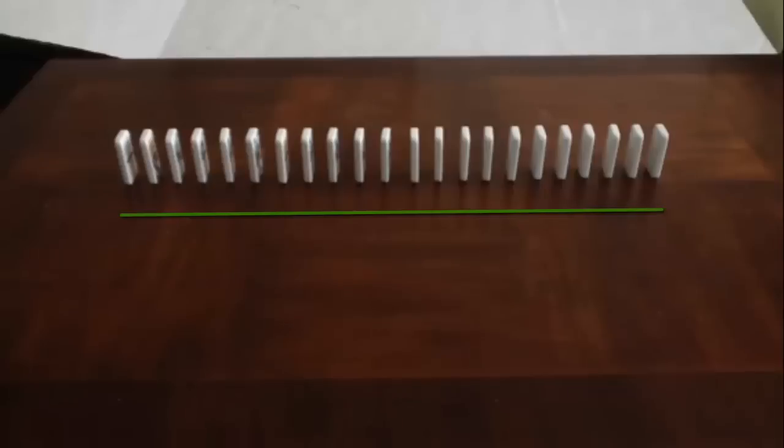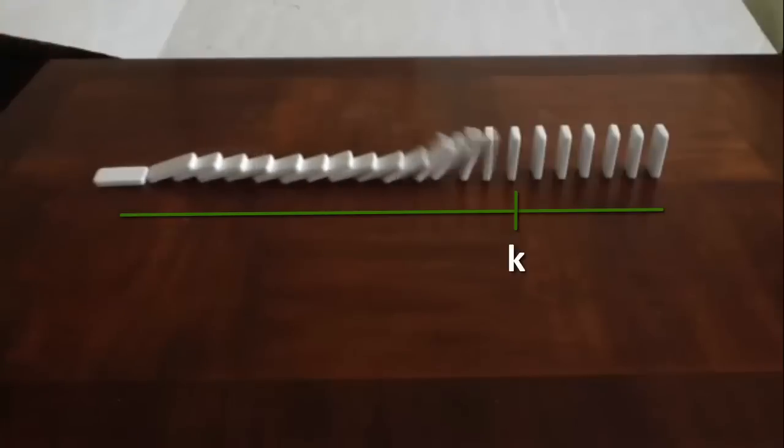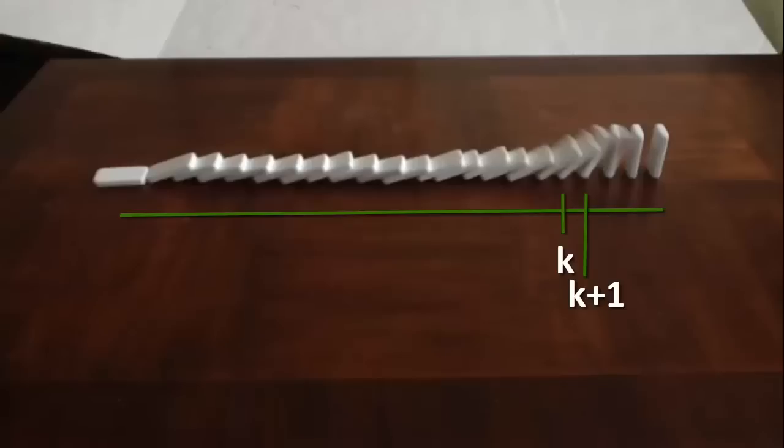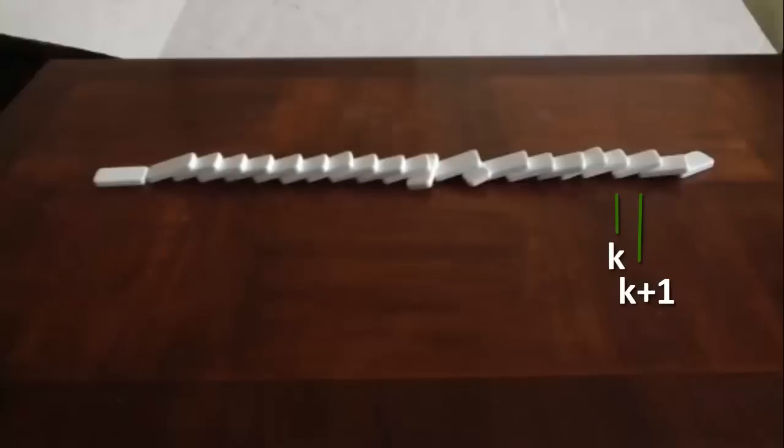So when proving by induction, we're going to assume that everything works all the way up to some natural number k, just like these dominoes. We're going to have to show that the next domino, or in other words, the k plus 1 domino, is going to have to fall in order for the statement to be true for all natural numbers. Luckily, it does. Now just move k farther and farther down the line, and you've covered all of the natural numbers.